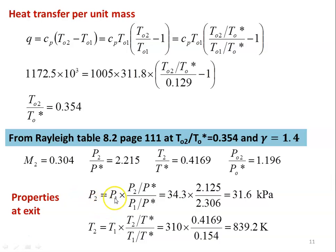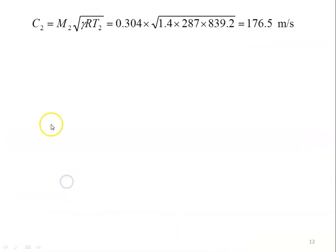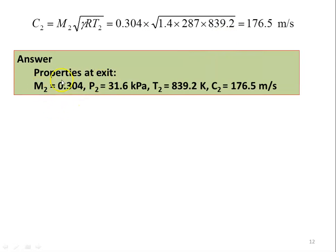Properties at the exit: P2 = P1 × (P2/P*) / (P1/P*) = 34.3 × 2.215 / 2.306 = 31.6 kPa. T2 = T1 × (T2/T*) / (T1/T*) = 310 × 0.4169 / 0.154 = 839.2 Kelvin. Velocity C2 = M2 × √(γRT2) = 0.304 × √(1.4×287×839.2) = 176.5 m/s. Answer: M2=0.304, P2=31.6 kPa, T2=839.2 K, C2=176.5 m/s.